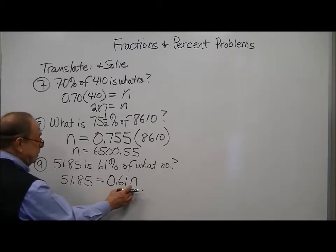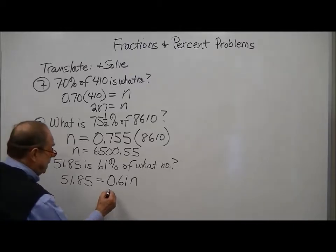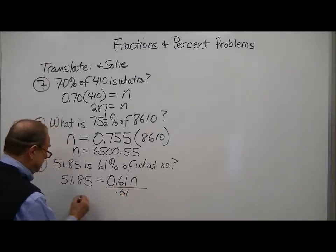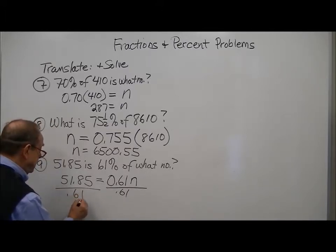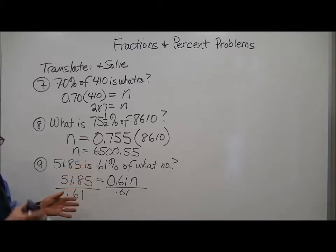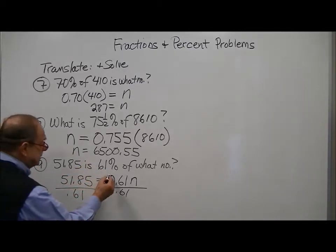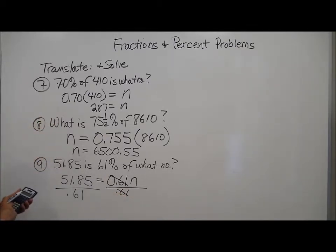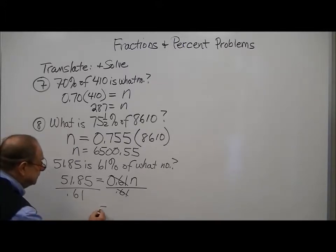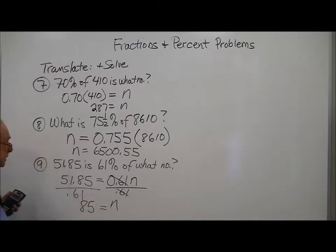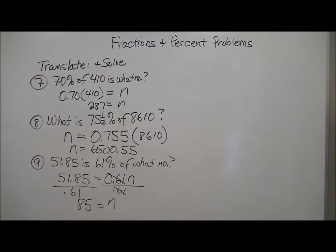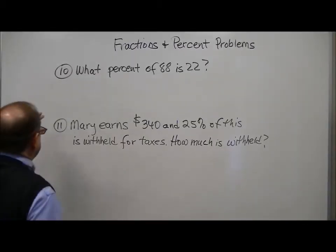Now for this one, in order to find out what n is, we have to divide both sides by .61. Normally I would say get rid of decimals, but not here. You're using your calculator, so this cancels out nicely. And we just have to do this. 51.85 divided by .61 gives you n equals 85.